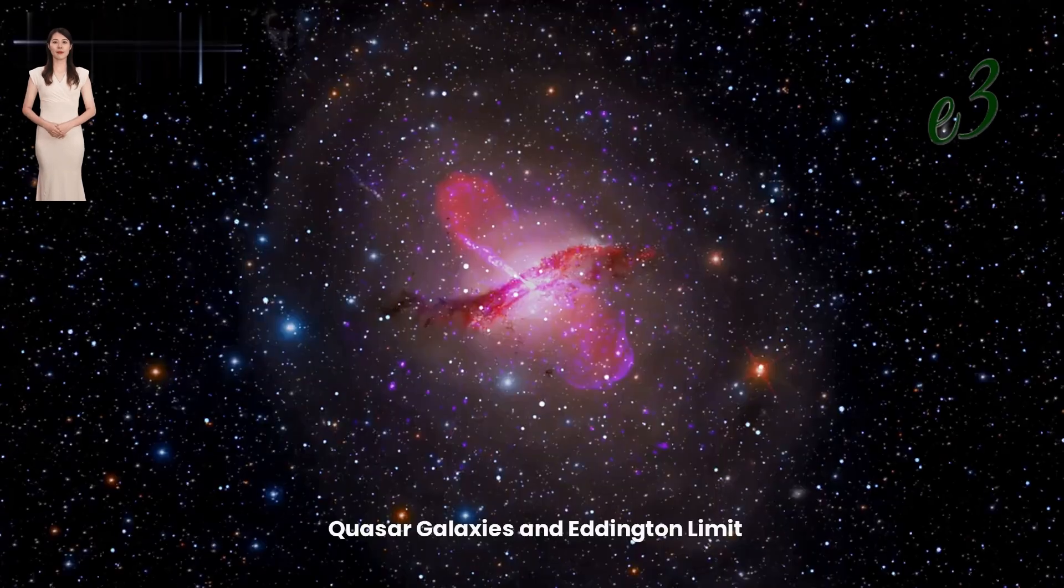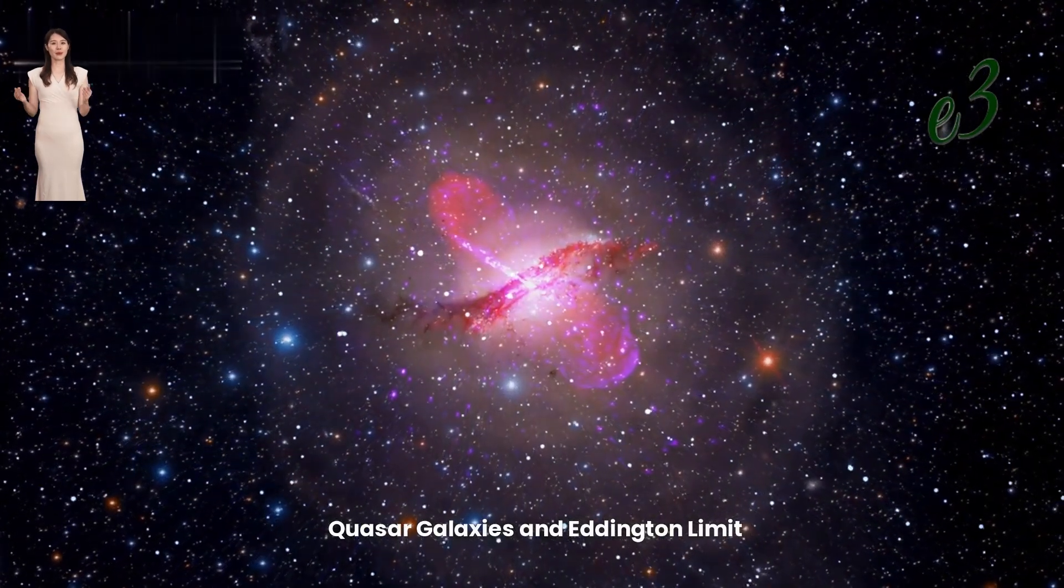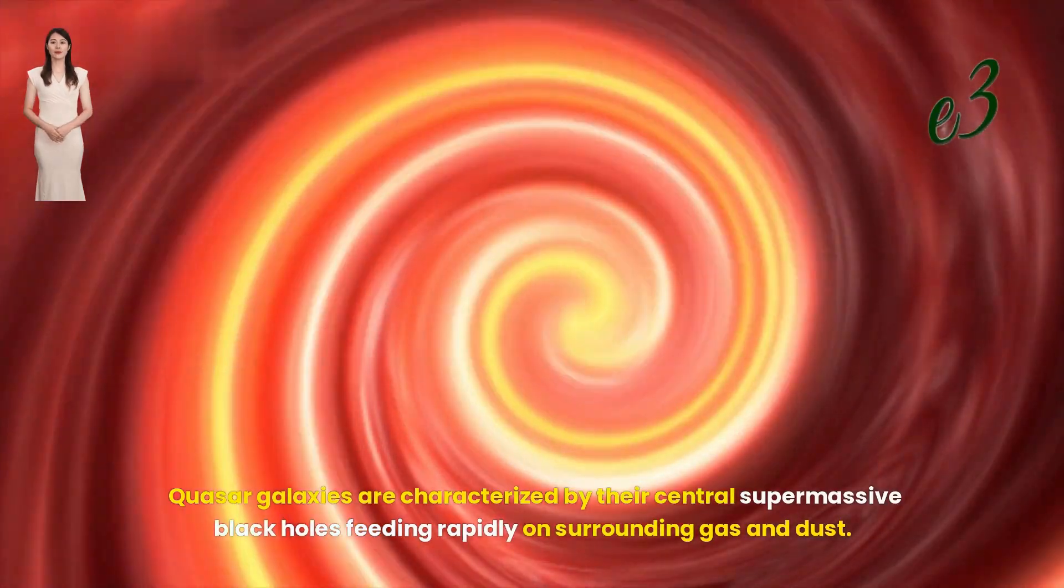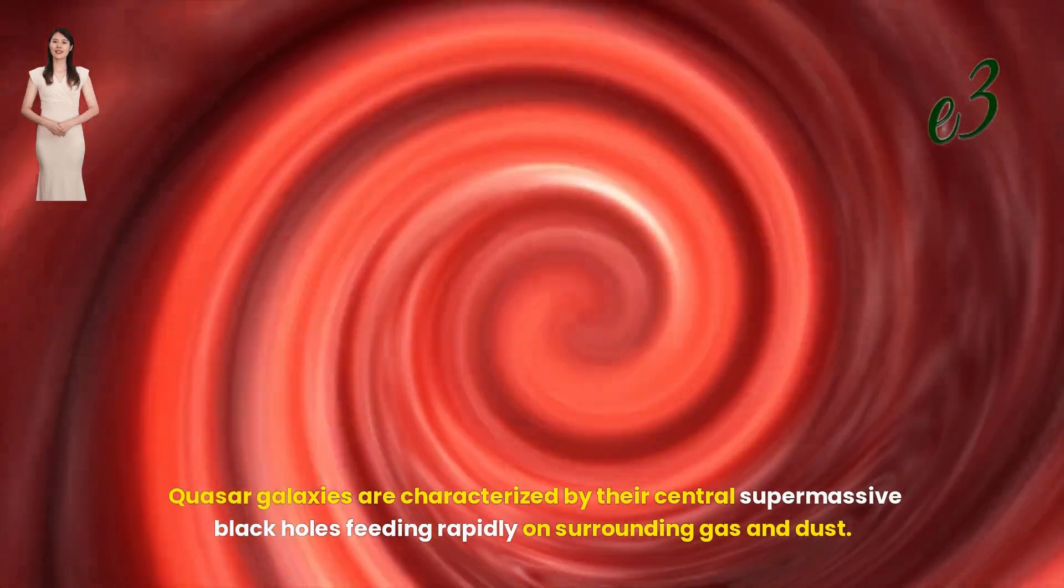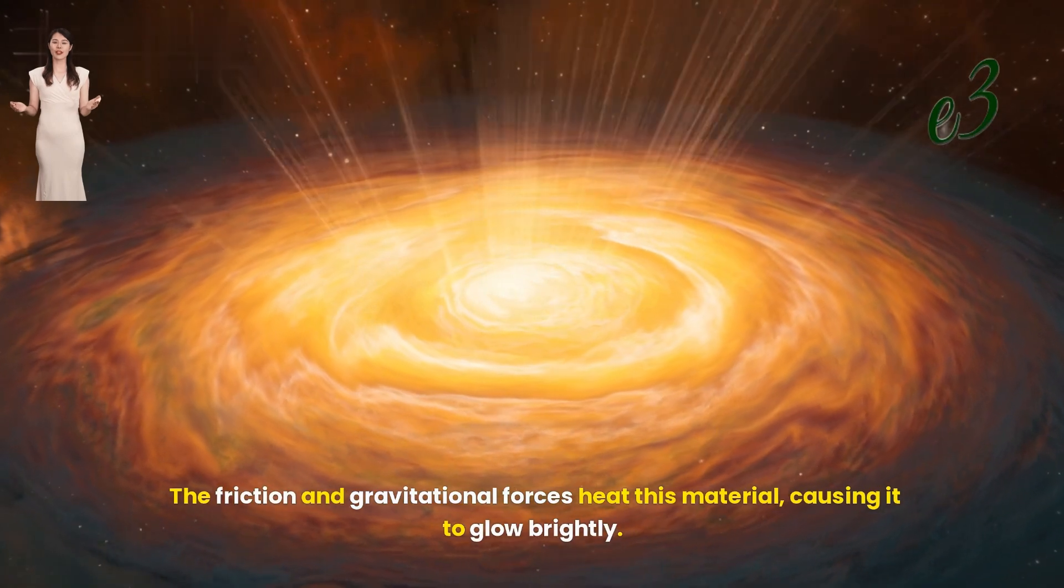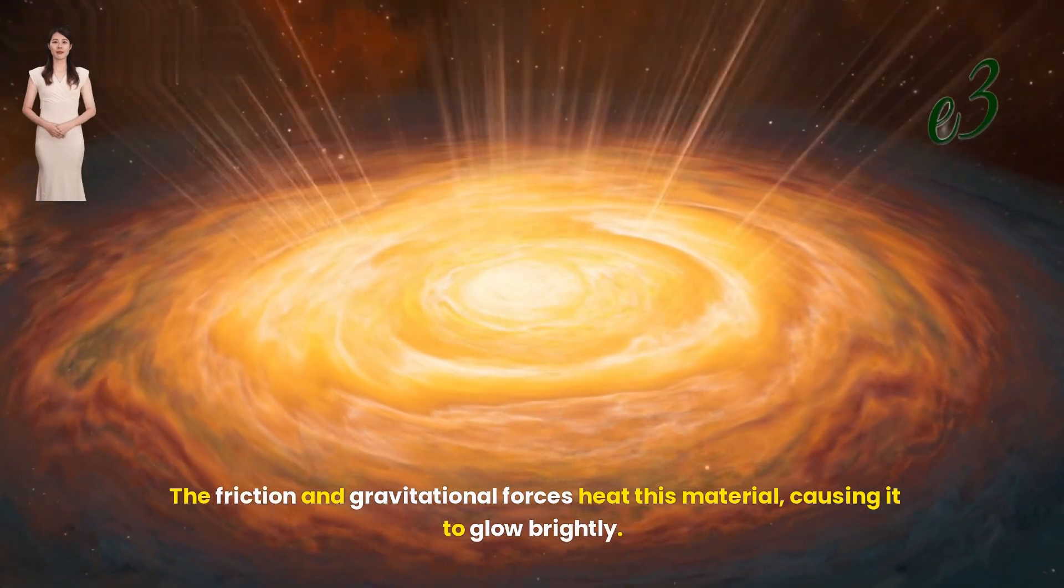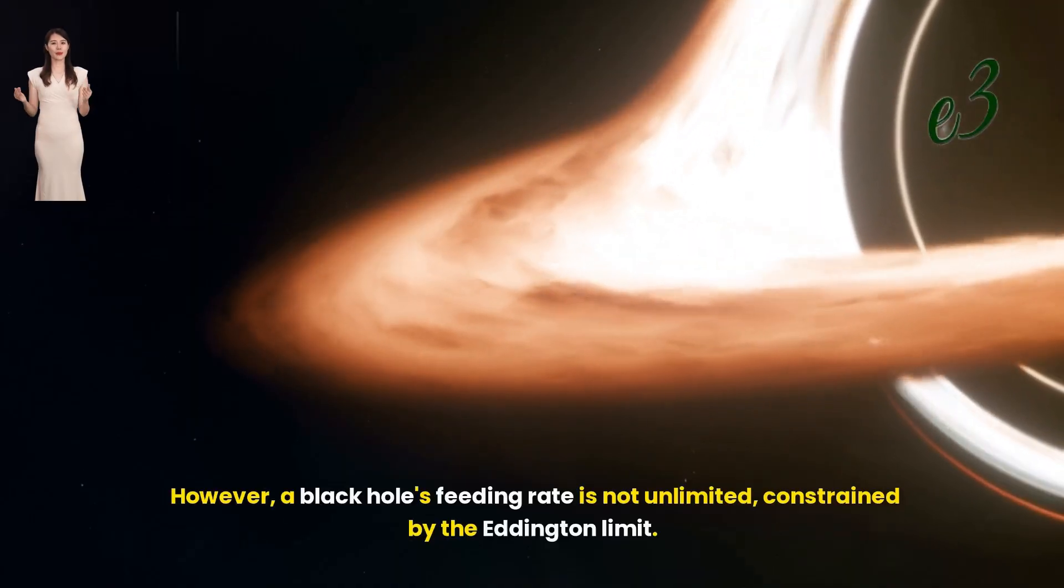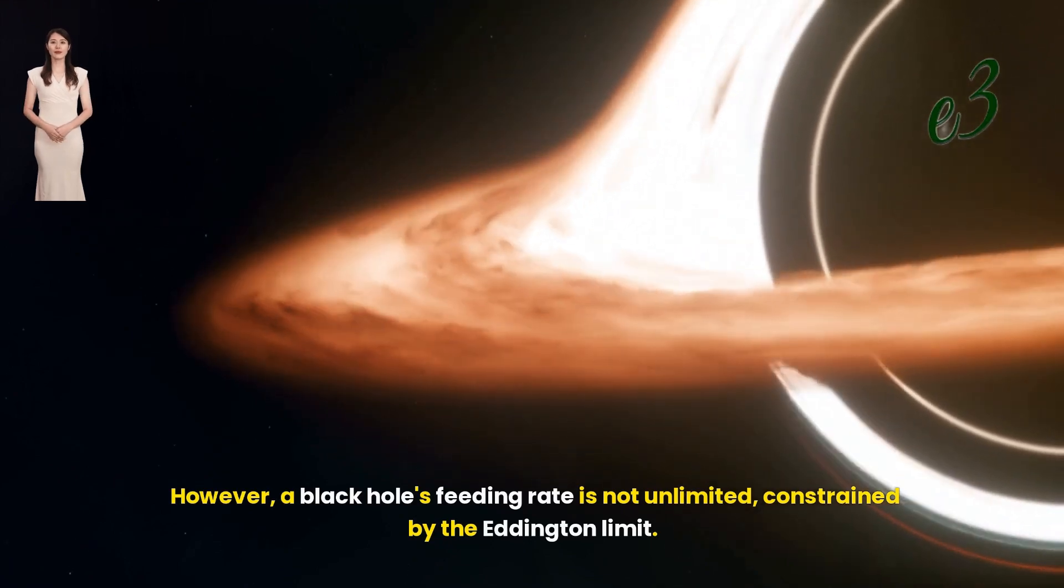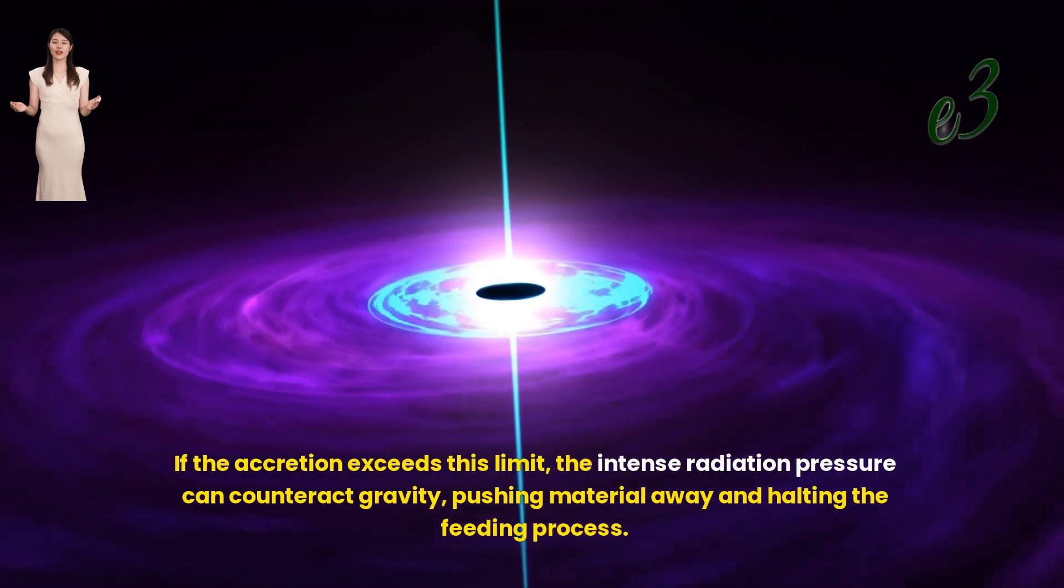Quasar galaxies and Eddington limit. Quasar galaxies are characterized by their central supermassive black holes feeding rapidly on surrounding gas and dust. The friction and gravitational forces heat this material, causing it to glow brightly. However, a black hole's feeding rate is not unlimited, constrained by the Eddington limit. If the accretion exceeds this limit, the intense radiation pressure can counteract gravity, pushing material away and halting the feeding process.